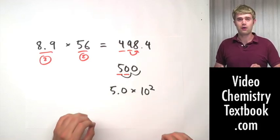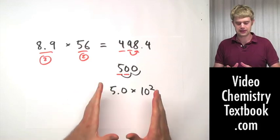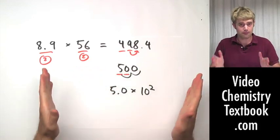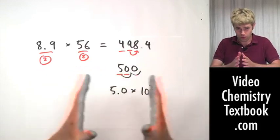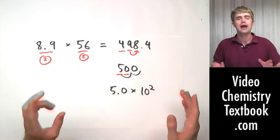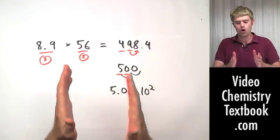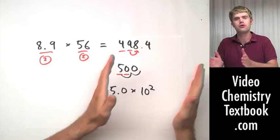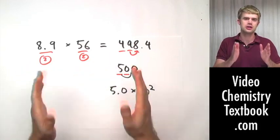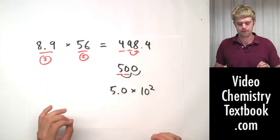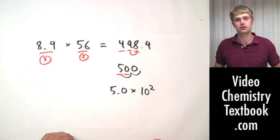So that is how I take numbers that have a whole bunch of zeros and show which of those zeros are significant and which aren't. I have to put the number into scientific notation to do that.